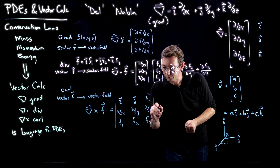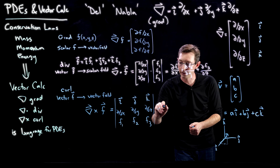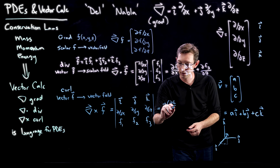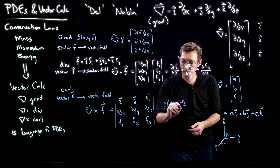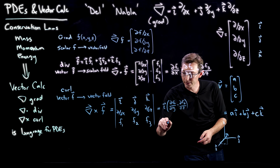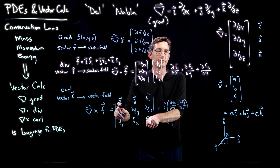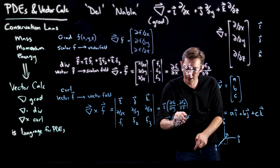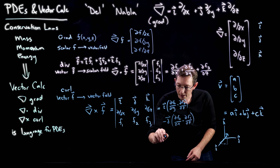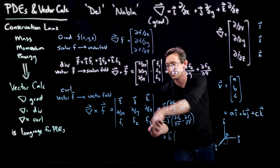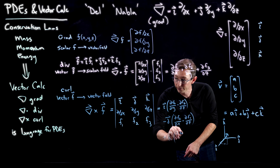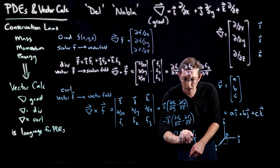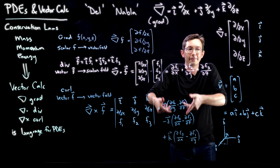Computing that determinant: in the i direction you have i times (∂f3/∂y − ∂f2/∂z), minus in the j direction you have (∂f3/∂x − ∂f1/∂z), plus in the k direction you have (∂f2/∂x − ∂f1/∂y). You can tell this is a vector field because it has an i, a j, and a k component.